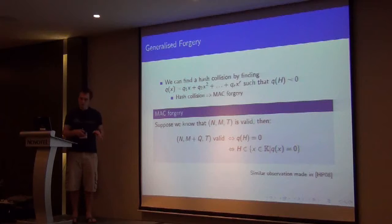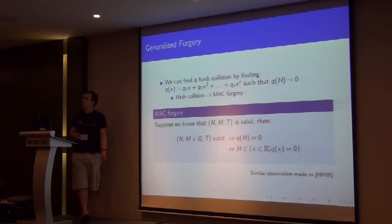So if we know that the nonce, message and tag is a valid tuple, then it's valid for this new message, precisely when this forgery polynomial is 0. And that's a stupid remark, that's the same as saying that the hash key is in the set of roots of this polynomial.